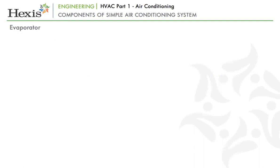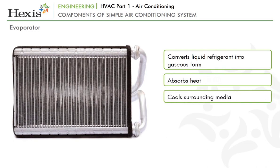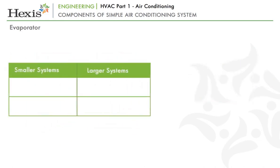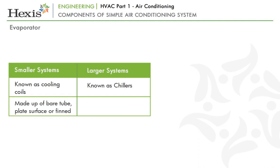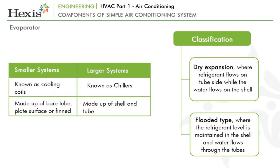The evaporator is the component where liquid refrigerant is converted back into gaseous form, thereby absorbing heat and cooling the surrounding media — indoor air in smaller systems and water in larger systems. In smaller systems like window ACs, evaporators may also be known as cooling coils. In larger systems where they cool water, they may be known as chillers. In smaller systems, evaporators can be made up of bare tube, plate surface, or finned construction, with air flowing directly over the surface. Plates and fins are added to increase the area of contact. Larger systems like chillers are made up of shell and tube construction and can be classified as dry expansion type or flooded type.